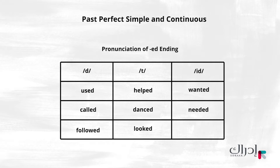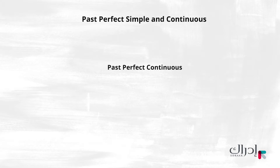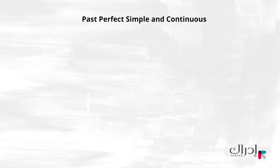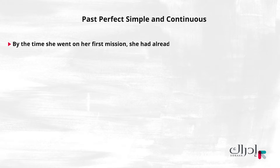Past perfect continuous. Now we're going to look at the second grammatical structure using 'had'. Another example from our listening: By the time she went on her first mission, she had already been training for five years.